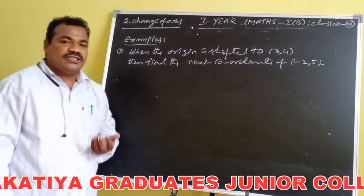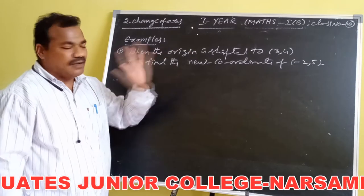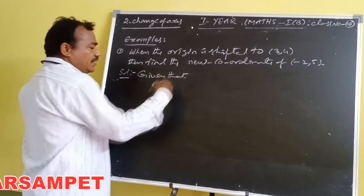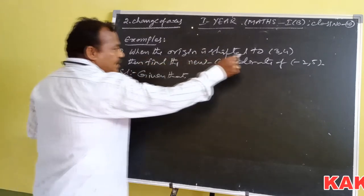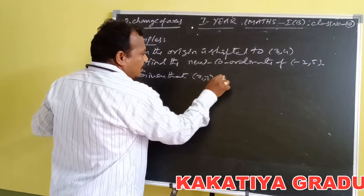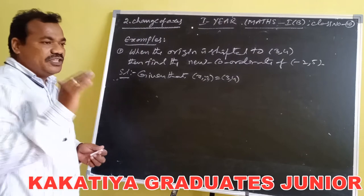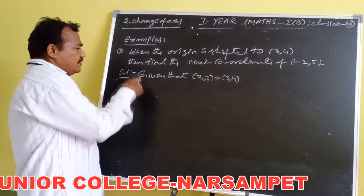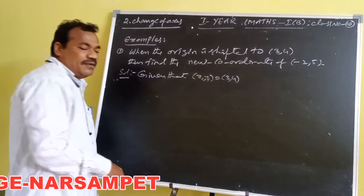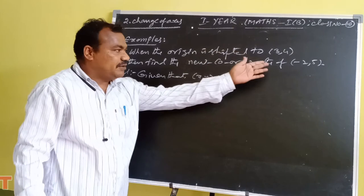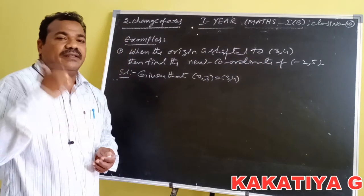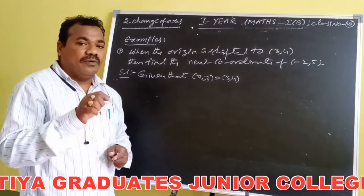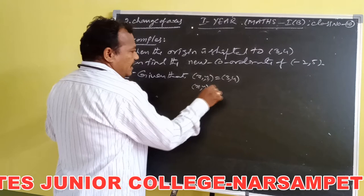Whenever the origin is shifted to another fixed point, we consider this point as x₁ comma y₁. Given that, here we identify the given point coordinates. The shifting point we consider as x₁ comma y₁. Whenever the origin shifts to a coordinate point, we consider that point as x₁ comma y₁. We have to find out the new coordinates of (-2, 5) — this is the required coordinate point in the new plane. The given coordinate (-2, 5) is in the old system.